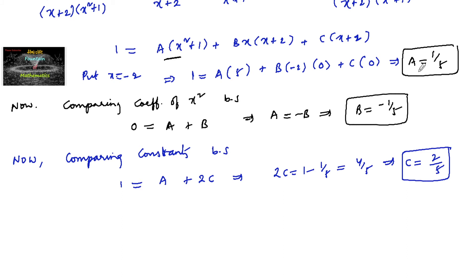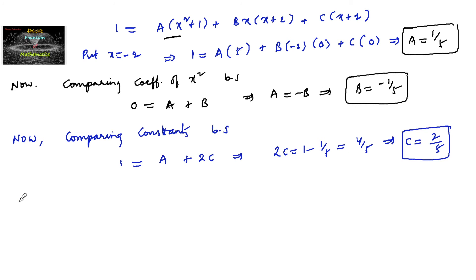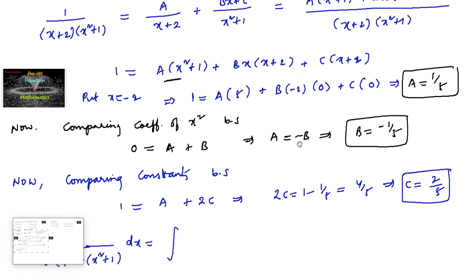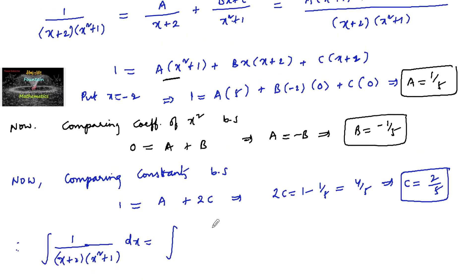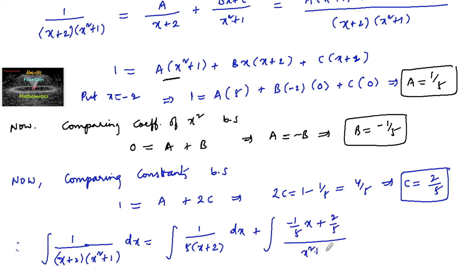So finally A = 1/5, B = −1/5, and C = 2/5. Substituting back into the partial fractions, the integral becomes: integral of [1/5·(1/(x+2)) + (−(1/5)x + 2/5)/(x²+1)] dx.